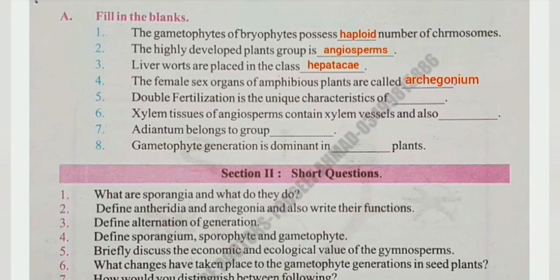Number 5: Double fertilization is the unique character of angiosperm. Number 6: Xylem tissues of angiosperms contain xylem vessels and tracheae. Number 7: Adiantum belongs to group fern. Number 8: Gametophyte generation is dominant in bryophyte plants.